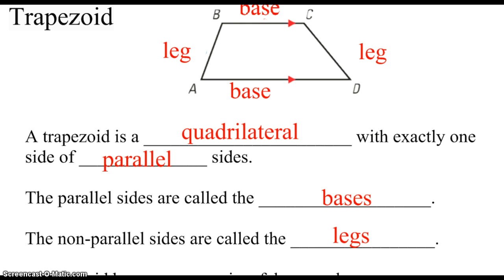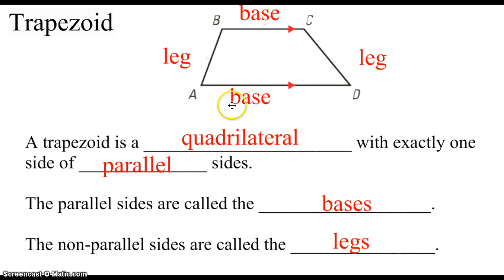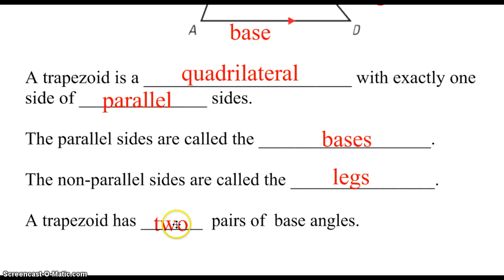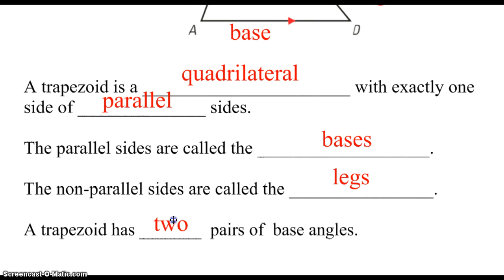And then lastly, since every trapezoid has bases, the pairs along the bases are what we call base angles. So every trapezoid is going to have two pairs of base angles.